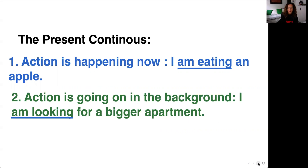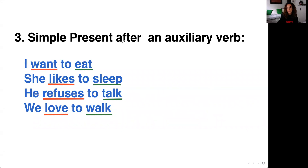The third kind of present tense in Levantine Arabic is the simple present after an auxiliary verb. The conjugation is a bit different. Auxiliary verbs are verbs like 'I want', 'she likes to sleep', 'he refuses to talk', 'we love to walk'. The verbs underlined in green would be the simple present, but the conjugation is slightly different.